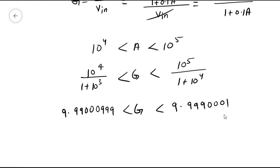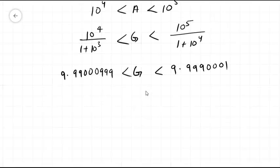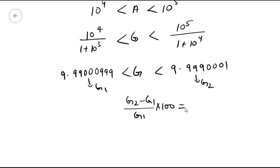The percentage change is (G2 - G1)/G1 times 100. If we solve this we get 0.0899, which is roughly equal to 0.09 percent, and that's the right answer. Thank you.